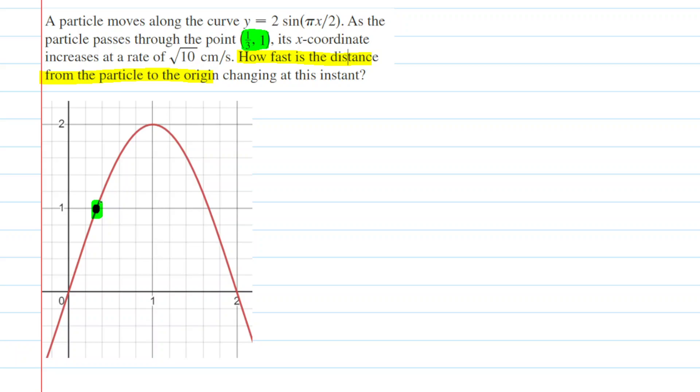Think about that. The distance from the particle, which is the green dot, to the origin, which is located over here. So we need to come up with an expression for that distance.